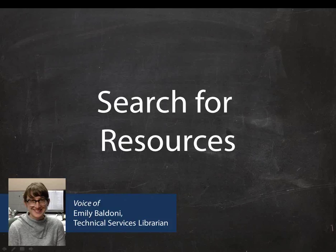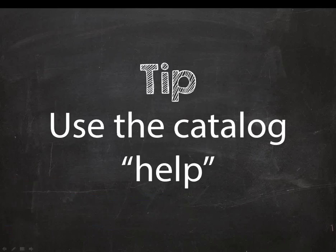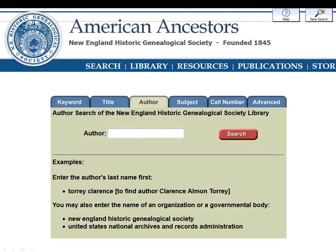In this next section we'll talk about how to use the NEHGS catalog to search for books, periodicals, manuscripts, and any other type of resource. We'll go over different types of searches and tips and tricks to make searches more effective. Before getting into specific search types, I want to point out a few places for quick help. On the main search screen you'll see search tips and example searches just underneath the main search box, customized for each search type.